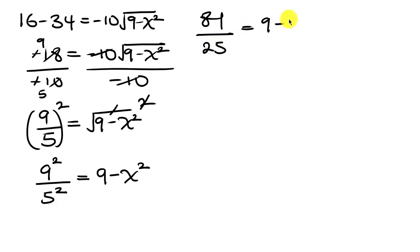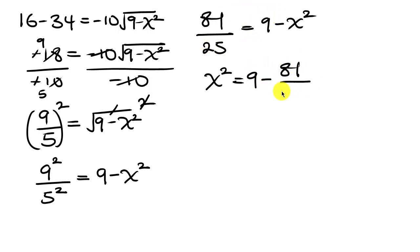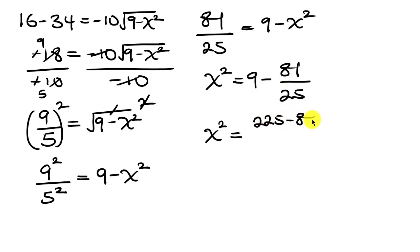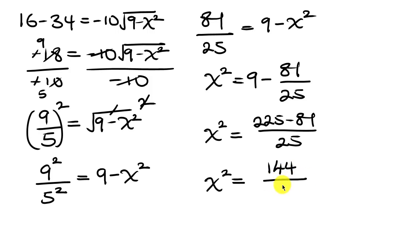We move negative x squared to the left — it becomes positive — and move 81 over 25 to the right where it becomes negative. So x squared equals 9 minus 81 over 25. Combining the fraction, 25 times 9 is 225, so x squared equals 225 minus 81 all over 25, which gives 144 over 25.